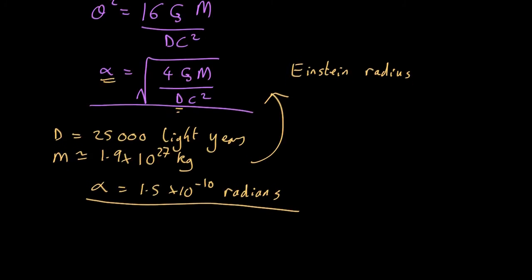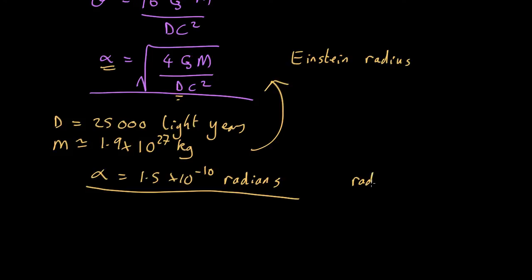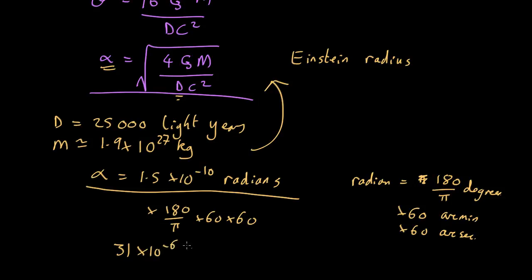We need to convert that into some unit we can understand. So a radian is 180 over pi degrees. So multiply by 180 over pi, that will give us degrees, but the angle is going to be much smaller than a degree. So then we have to times 60 for arc minutes, times another 60 to get it to arc seconds. So multiply by 180 over pi times 60 times 60 gives you 31 times 10 to the minus 6 arc seconds. So 31 micro arc seconds.